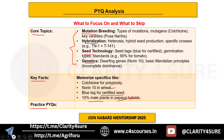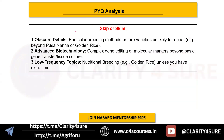What to skip or skim: obscure details and advanced biotechnology topics, and low frequency topics. Very specific breeding topics or very rare varieties unlikely to repeat should be skipped. Advanced biotechnology — complex gene editing or molecular markers beyond basic gene transfer or tissue culture — should be avoided. Nutritional breeding, with only one question from 2017 to 2024, should be deprioritized unless you have extra time.